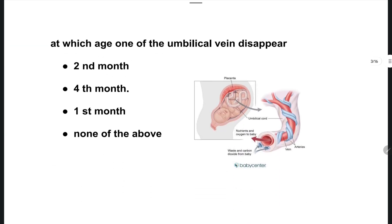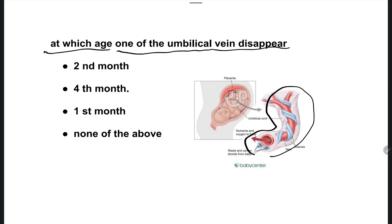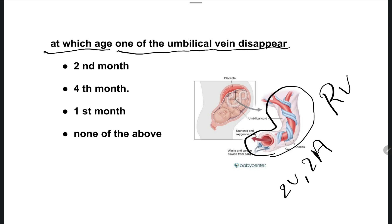The next question: at which age does one of the umbilical veins disappear? The umbilical cord normally consists of two veins and two arteries. After how many months does one vein — the right umbilical vein — disappear?